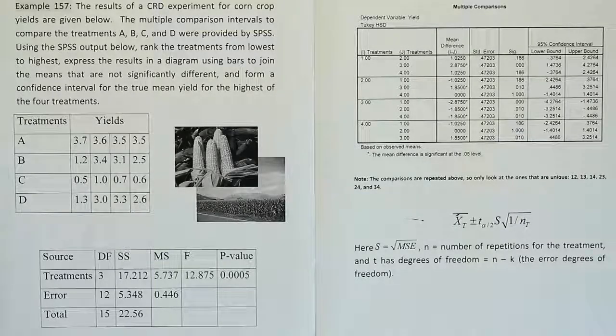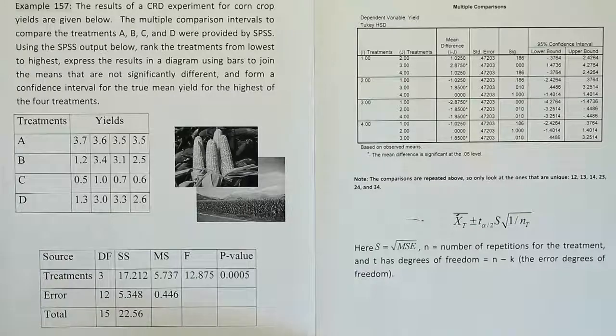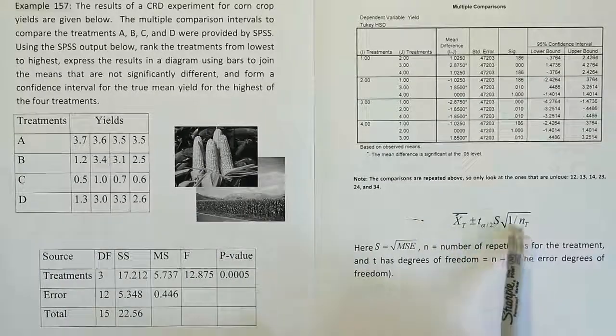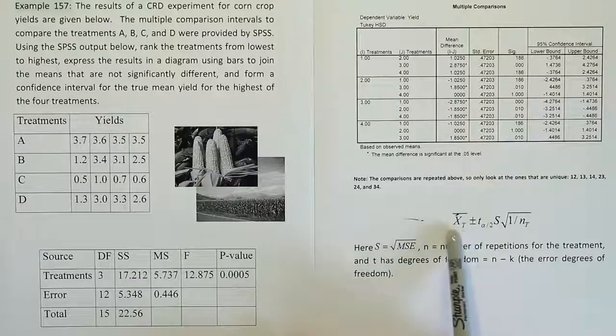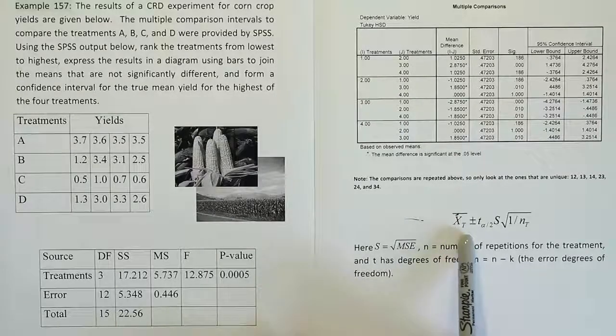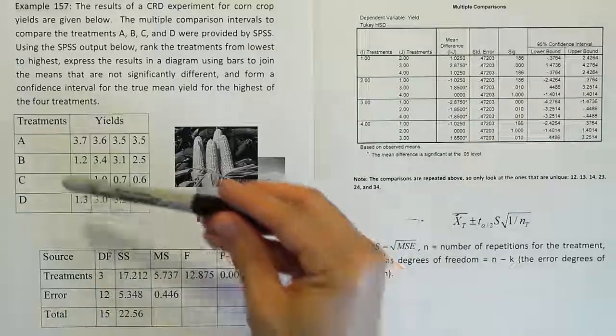Alright, let's continue with our example 157 by now constructing this confidence interval for treatment A. So the notation here says XT, but they want x bar T. That means the sample mean for treatment A in this case, since we're doing it for treatment A.